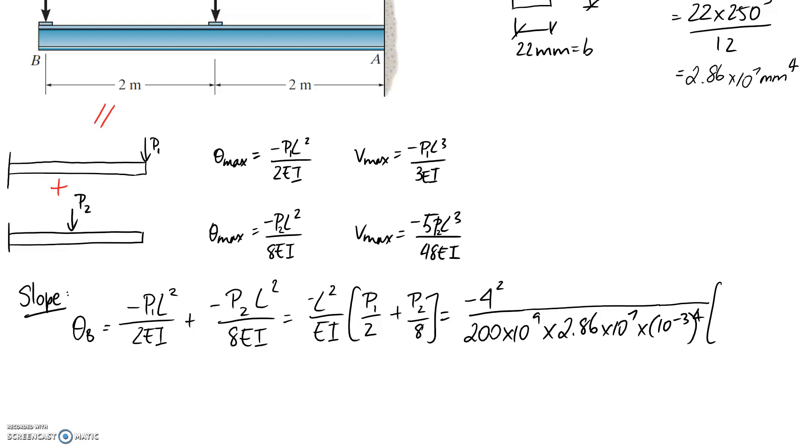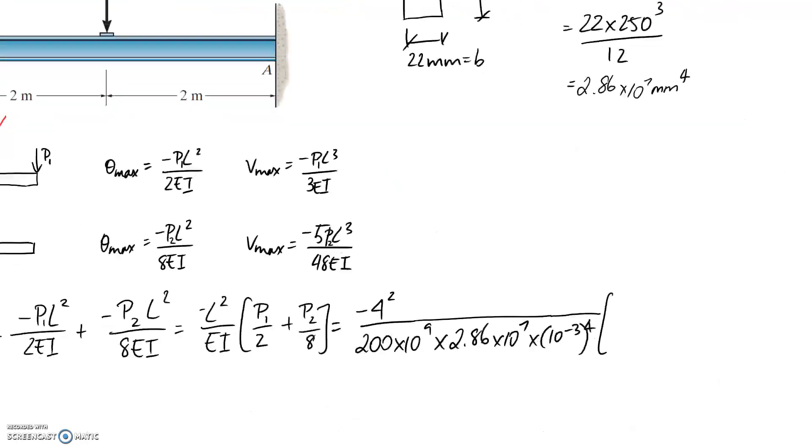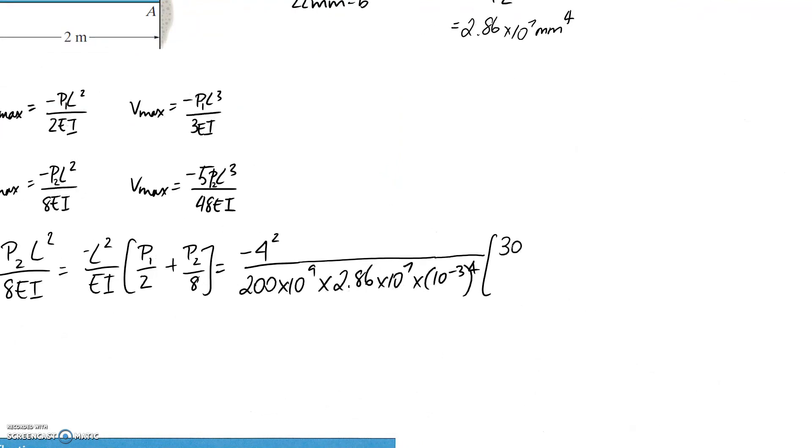We need to put in P1, which is the point load that's applied on the end, so 30 kilonewtons. P2 is going to be the 20. So 30,000 on 2, 20,000 on 8.